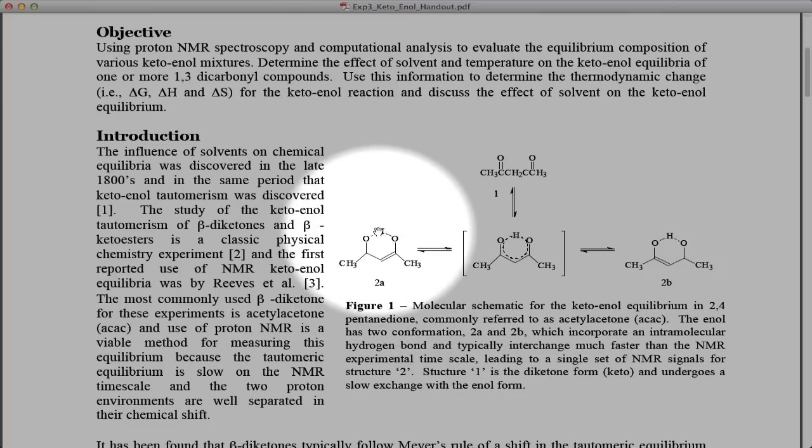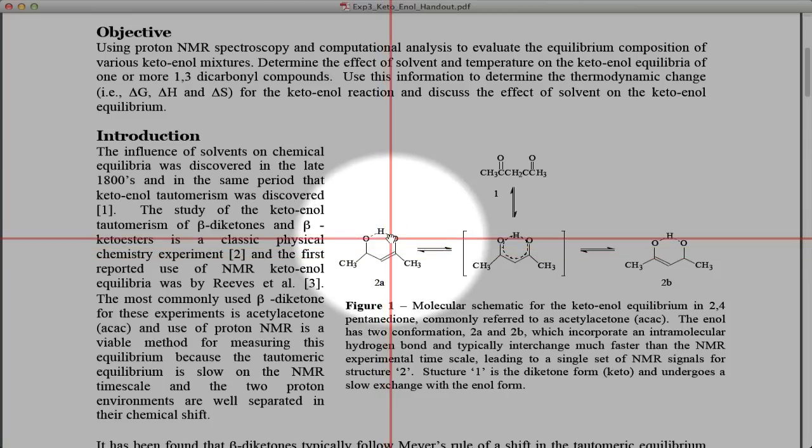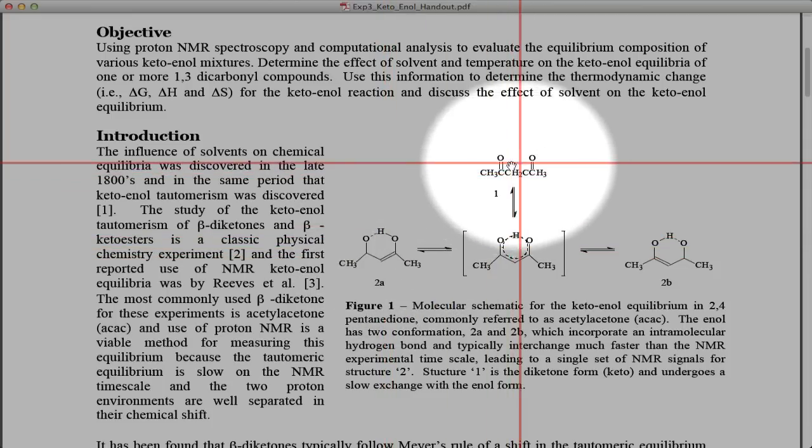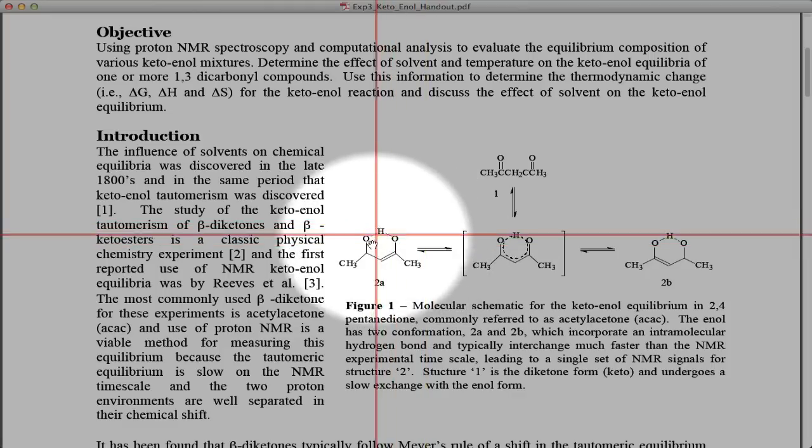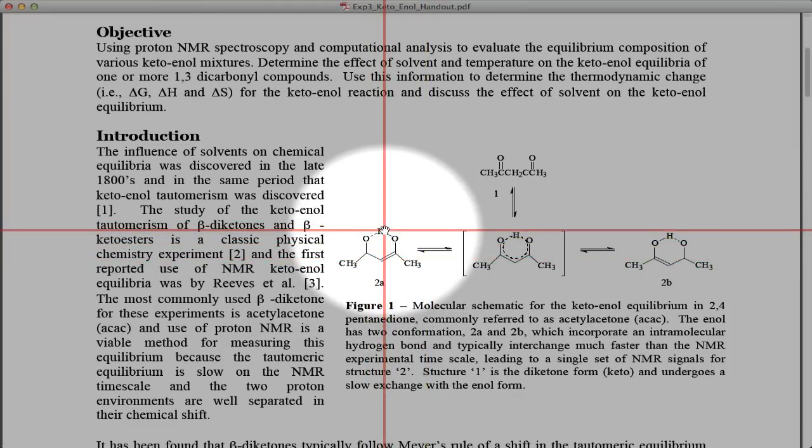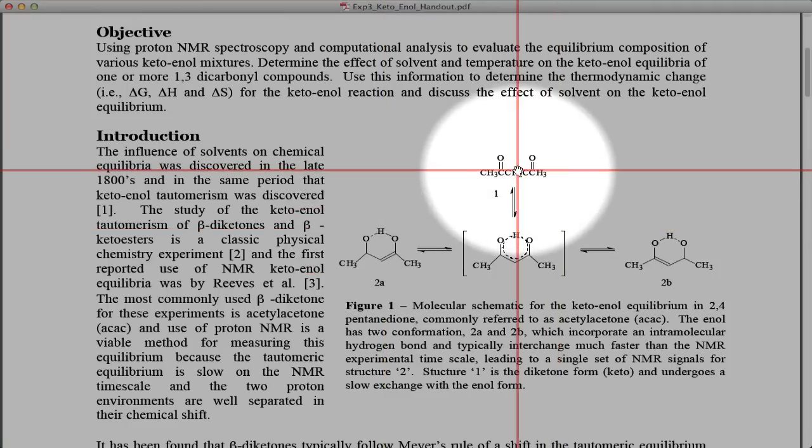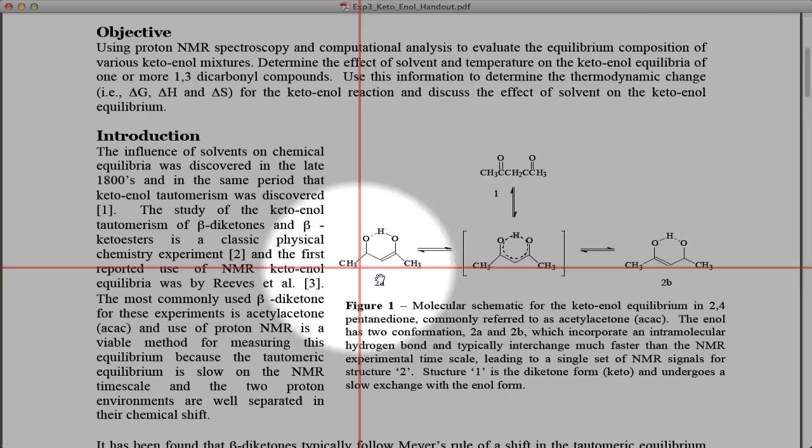We'll basically have two resonances because of that, but what will we have different for the enol form? You can see now this methylene is now just a CH methine and the other proton comes up here and very acidic, shifted very downfield to a much less shielded position in NMR.